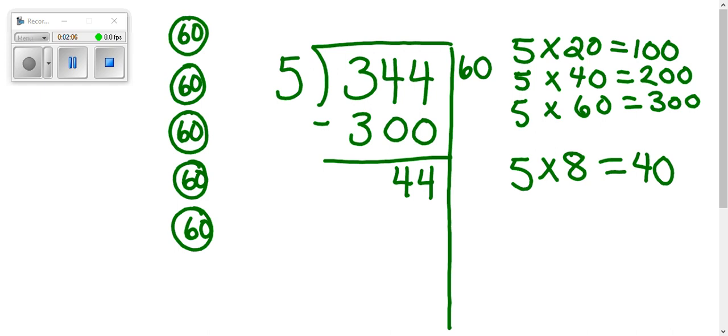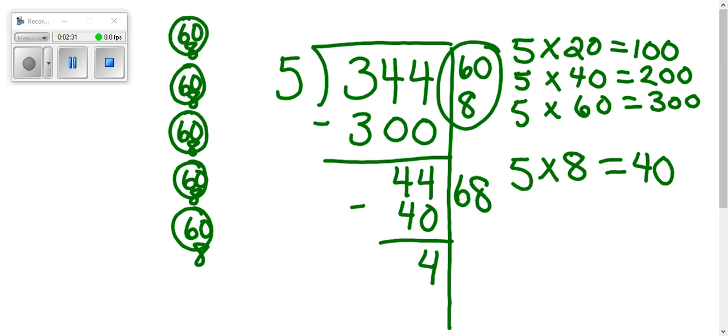So I'm going to say, five times, how about eight? Five times eight is 40. So that means that I just put eight more llamas in all of these pens and that got rid of 40 llamas. Don't forget that your eight over here on the side. When you subtract, we have four left over.